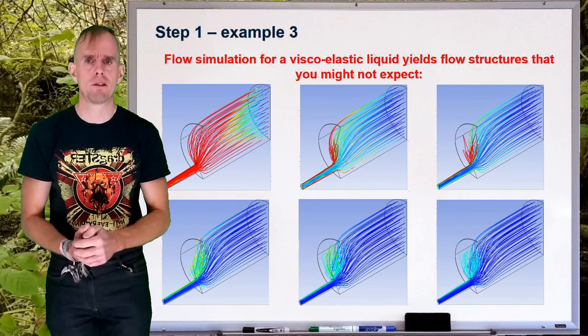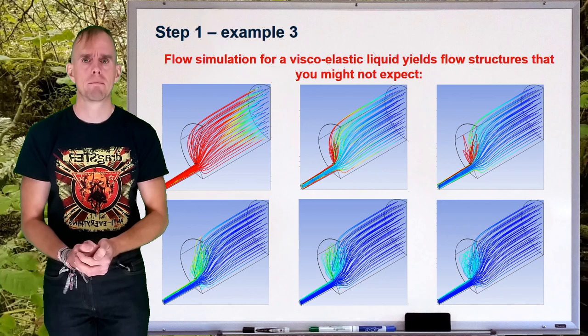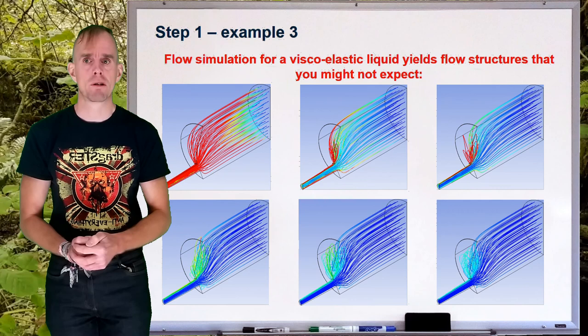And so, if your mental model doesn't incorporate that before you start to do CFD, then when you see a solution such as this plotted out, you will ask yourself, well, what's going on? Is this right? Do I understand this? Do I trust what the computer is doing? If, a priori, you know to expect these upstream vortices, then you might be surprised if you don't find it.